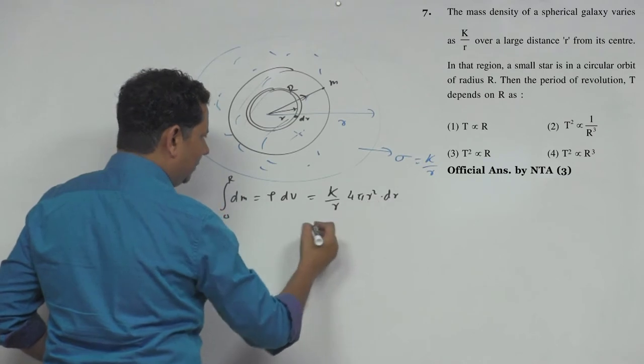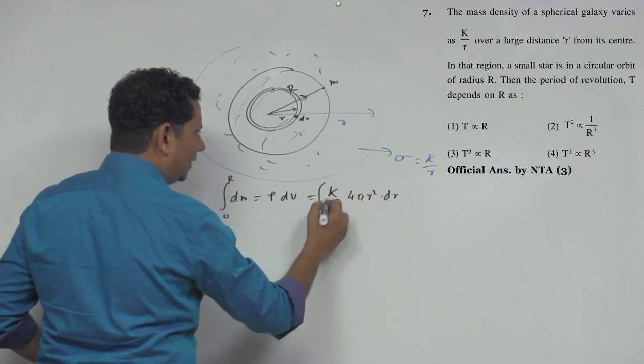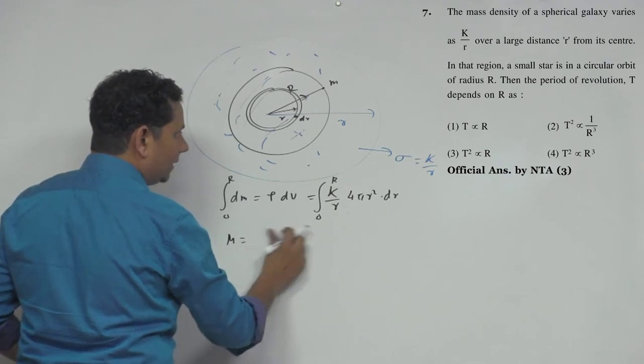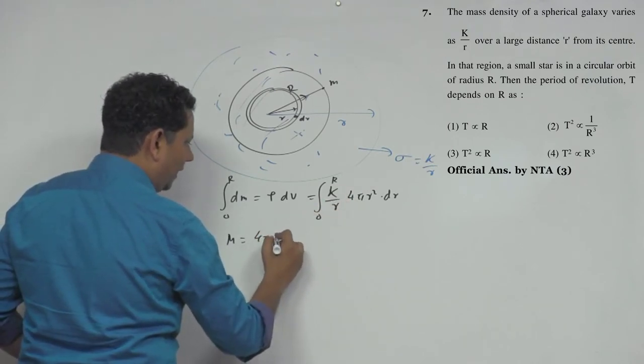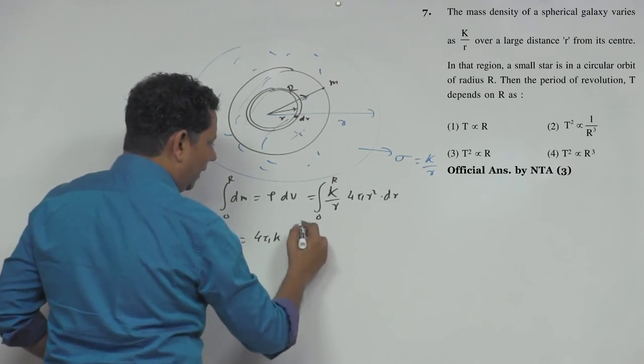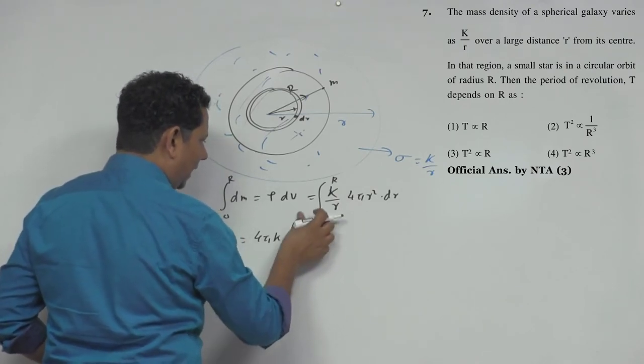We need to integrate from 0 to r. The mass will be equal to - taking out 4πk as constant - what remains is dr by r, which becomes r dr integration.